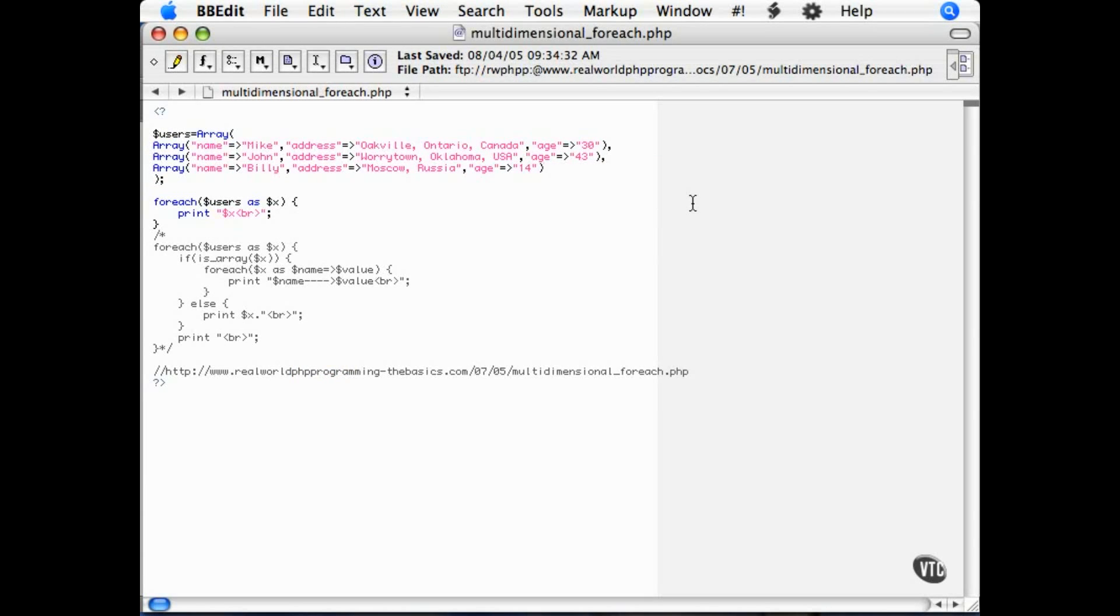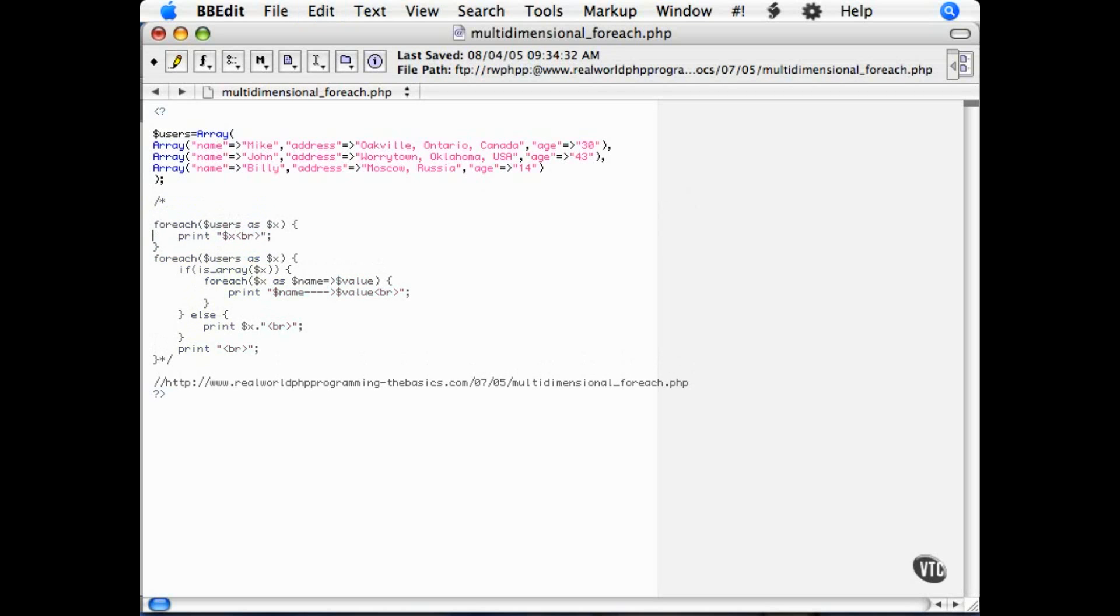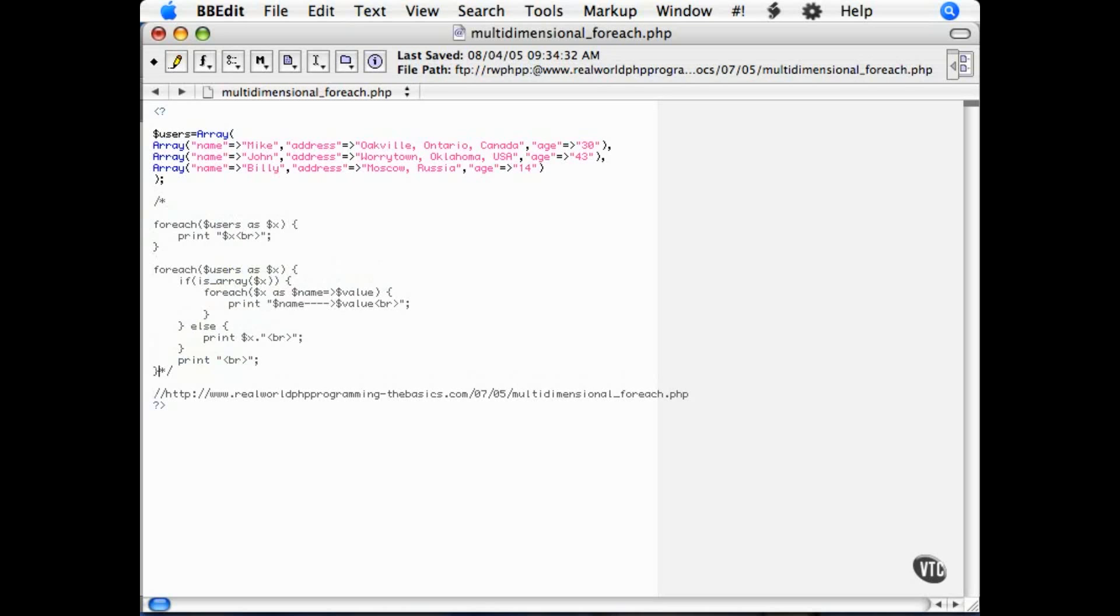So to solve this, you can nest foreach loops within each other. If you're not sure whether the element was an array or not, though, you need to check the variable type to see if you need to loop it through. Something like this. I already have it pre-written here. So this will delve into that additional level and print out the names and values.